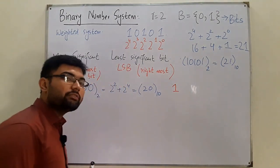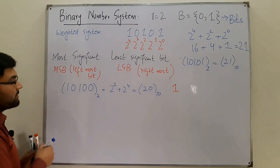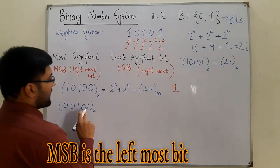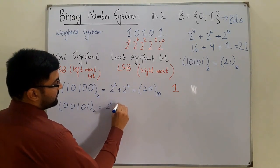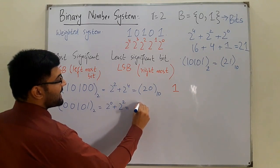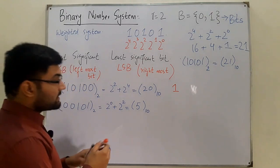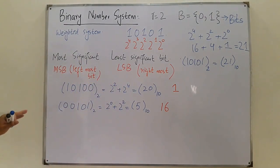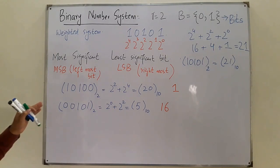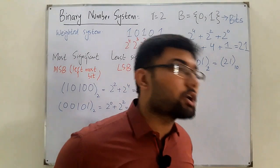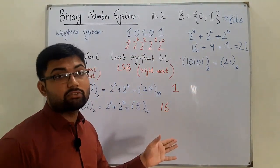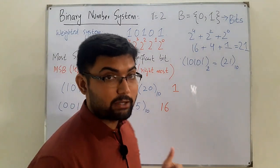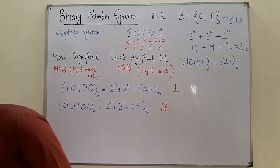Now if we change the most significant bit instead — making 10101 into 00101 — then 2 to the power 0 plus 2 to the power 2 gives 1 + 4 = 5 in decimal. This makes a difference of 16 compared to 21. Changing the leftmost (most significant) bit causes a much larger change. That is why these are called the most significant and least significant bits.